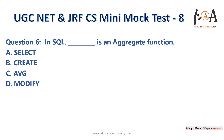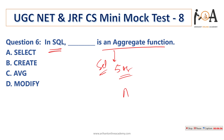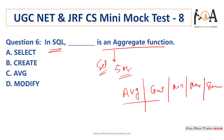Do subscribe to our YouTube channel and press the bell icon so you get notified of upcoming important lectures. Question number 6: in SQL, which of the following is an aggregate function? There are five aggregate functions in SQL: average, count, min, max, and sum. Average is listed as an option, so the correct answer is average.